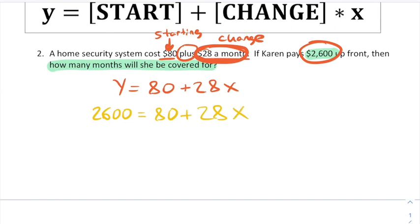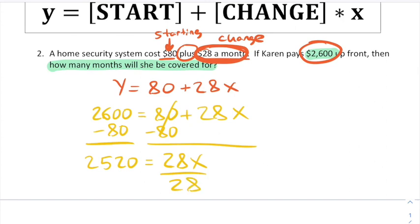Now this is a problem, like in the last chapter, that we just have to solve using AMAP. We'll subtract 80, getting 2520, and then the 28X drops down, and we'll divide both sides by 28. This gives us X equals 90. So she'll be covered for 90 months.